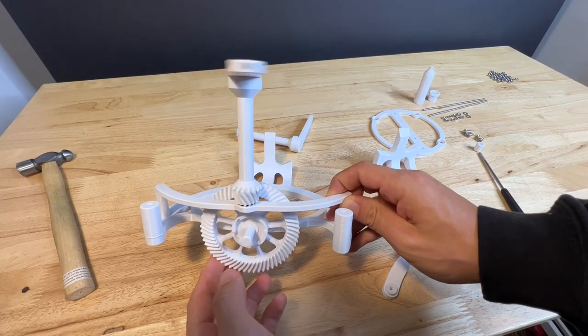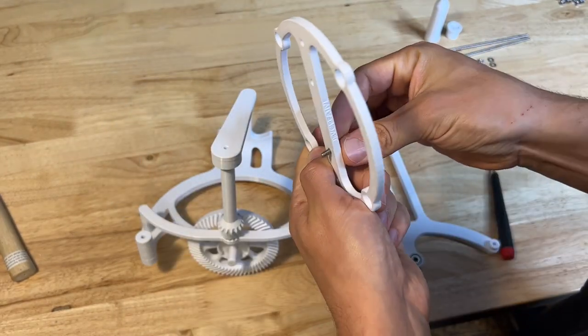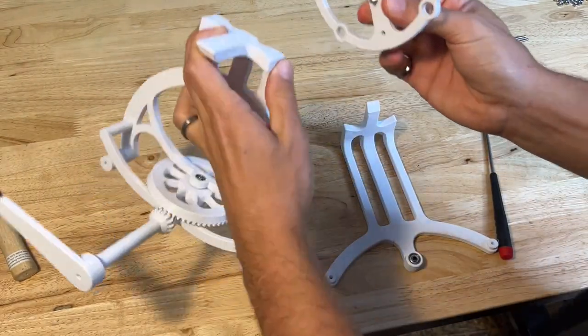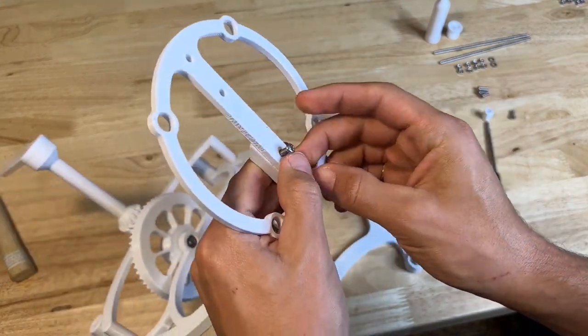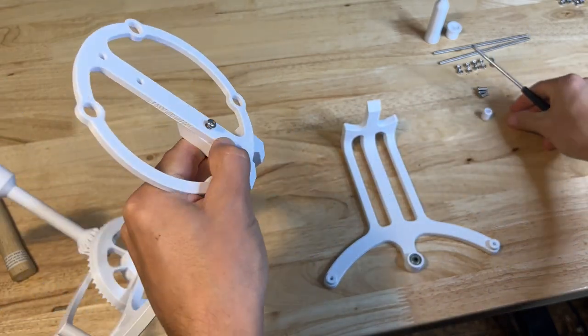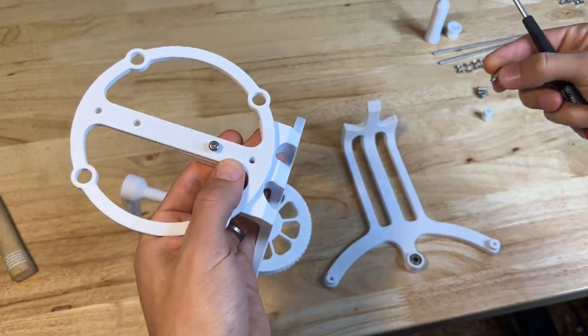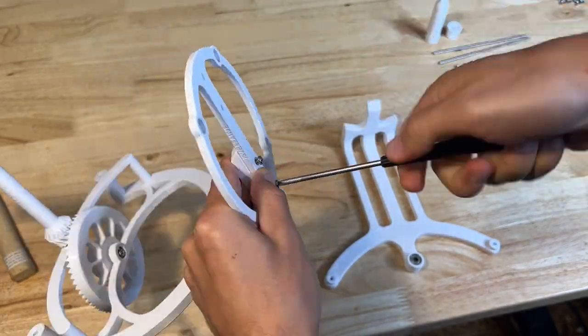Give the gear a spin to make sure that everything is working. Using two M4 by 12 millimeter screws, they go in through the back of the base and they screw into the holes on the arm mounts. Same thing here, screw this one in, not fully. Then you can screw the other screw all the way in. And then you can come back and tighten the first screw.